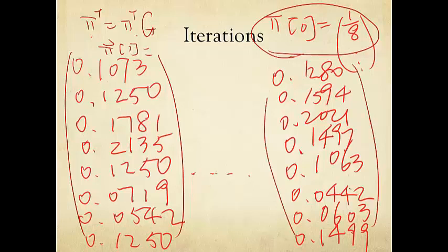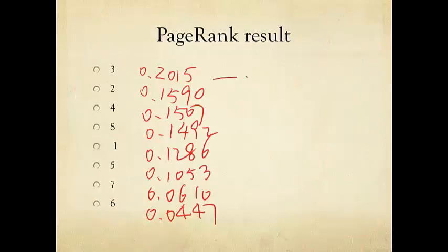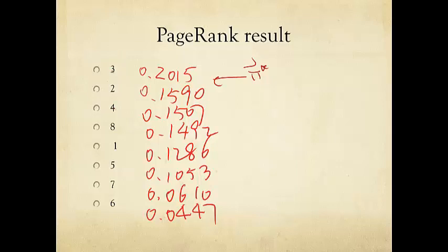Eventually, it converges to this, or something like this. Actually, this is only the sixth iteration. But it's getting quite close to the final answer. The final answer is shown here. This is the equilibrium pi vector for the eight nodes. I have already ordered them, and I have already normalized them.